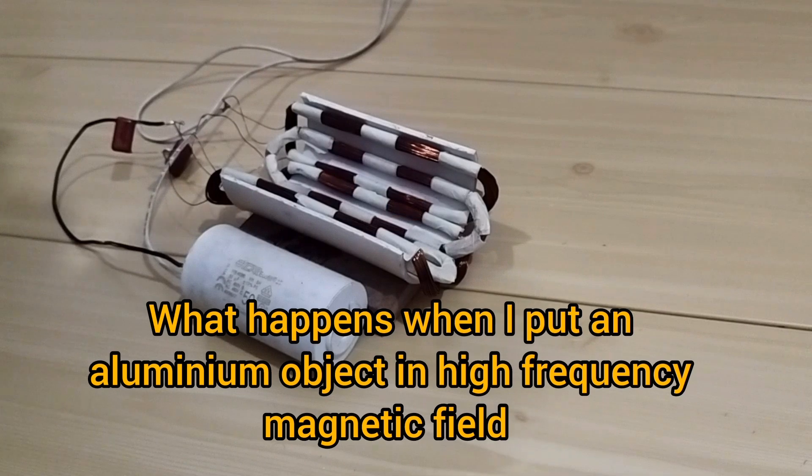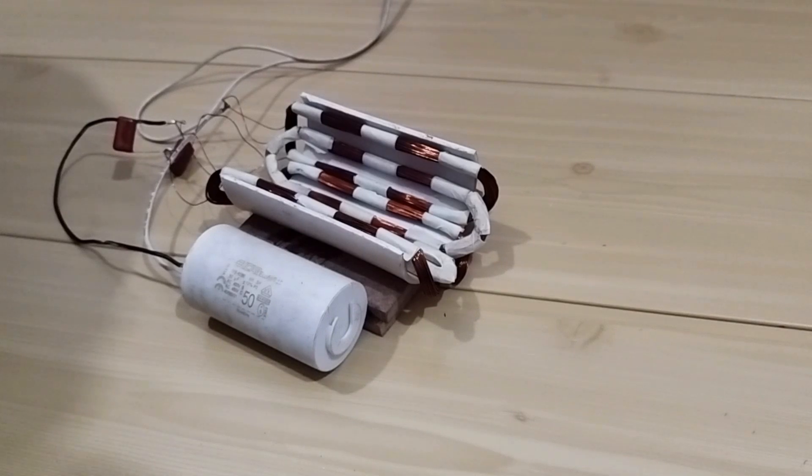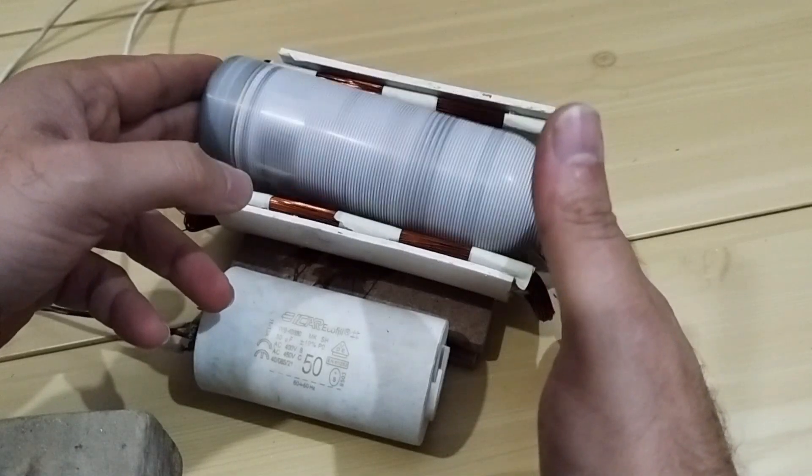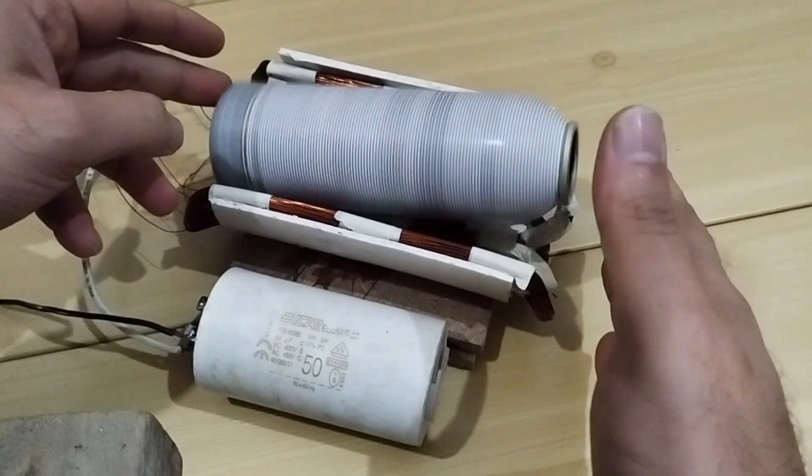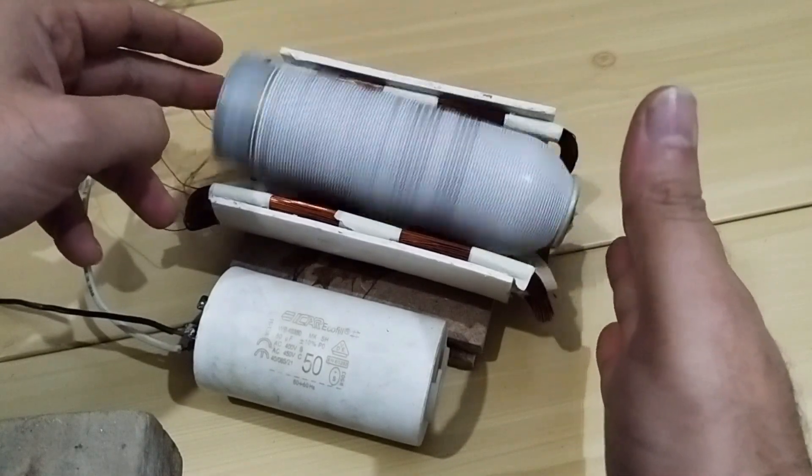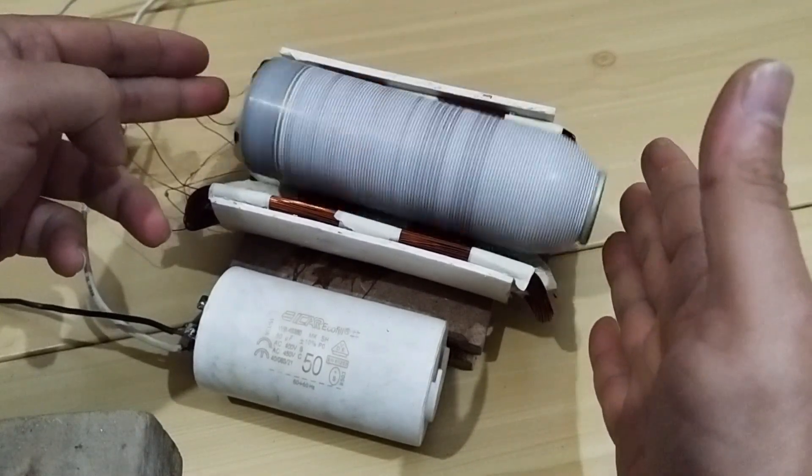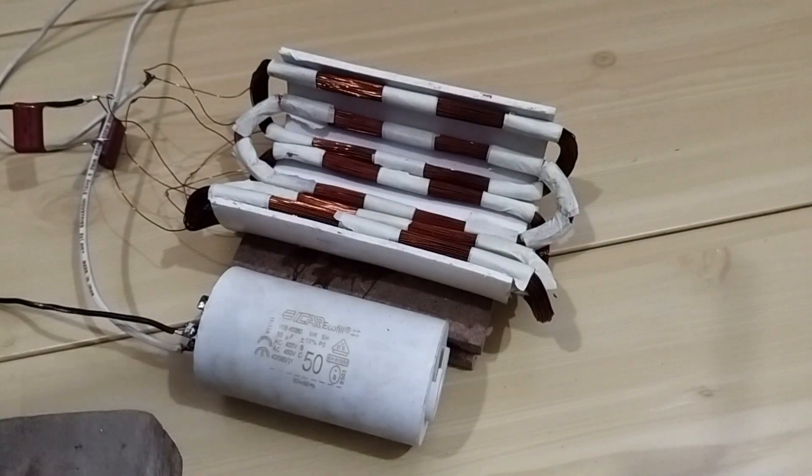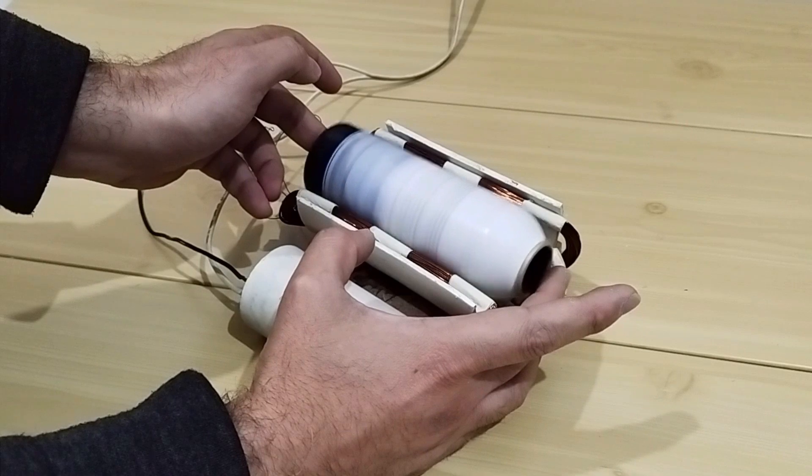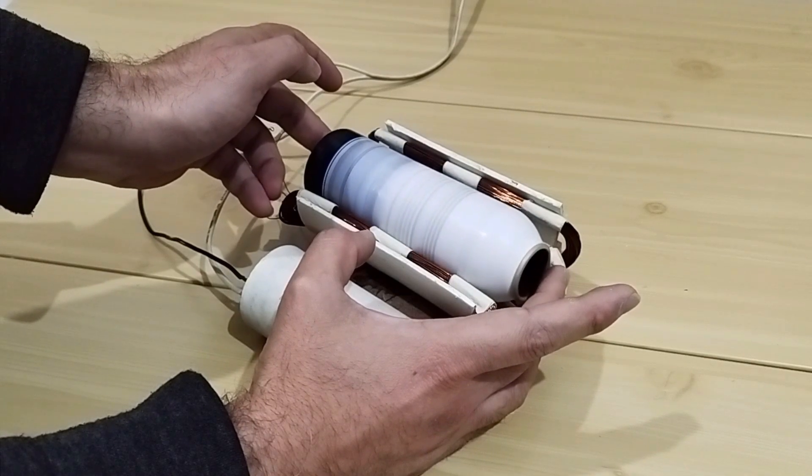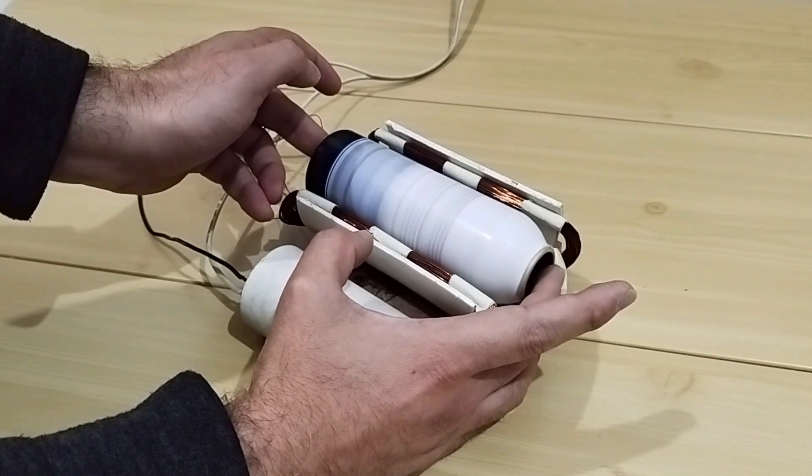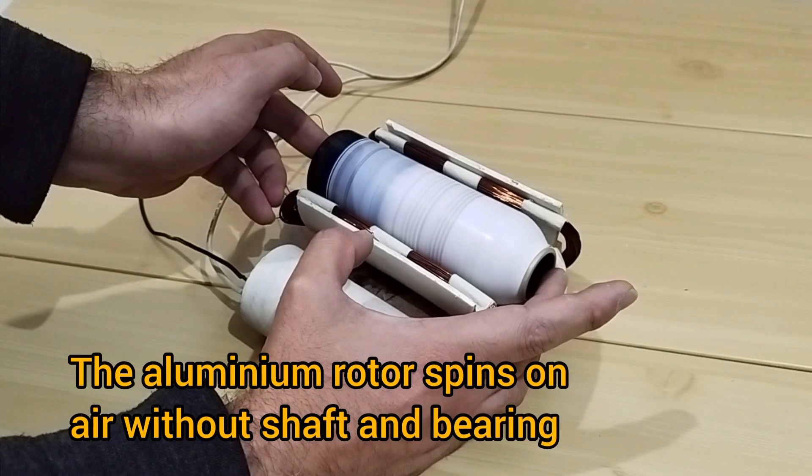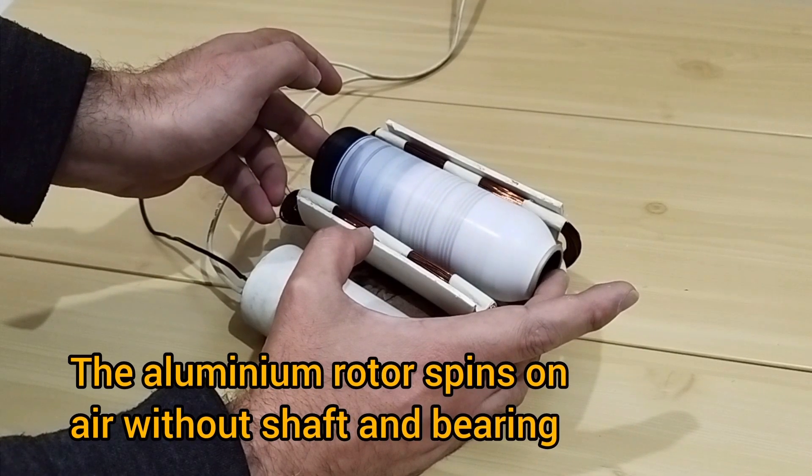What happens when I put an aluminum object in a high-frequency magnetic field? The aluminum rotor spins on air without shaft and bearing.